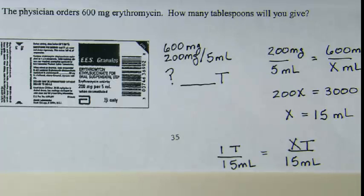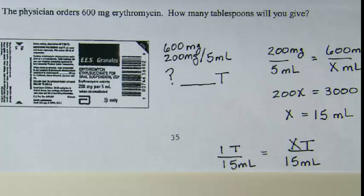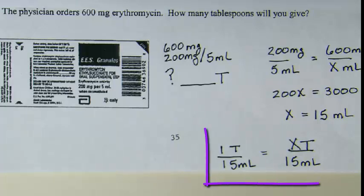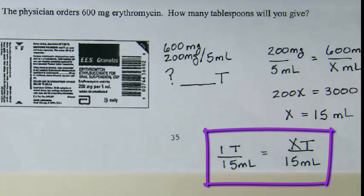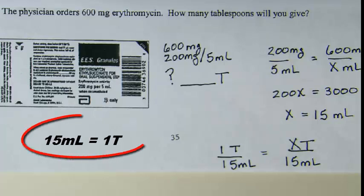200x equals 3000, x equals 15, and our label is milliliters. Glancing at our toolbox, we see this question was asking for tablespoons, so to complete the problem we need the conversion for tablespoons and milliliters. This ratio and proportion shows one tablespoon is the equivalent of 15 milliliters, so 15 milliliters of volume is the same as one tablespoon.